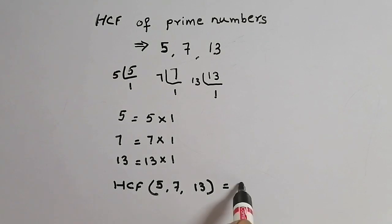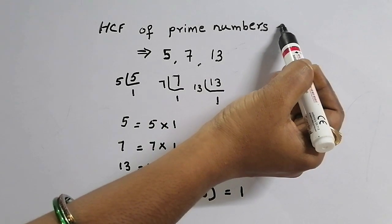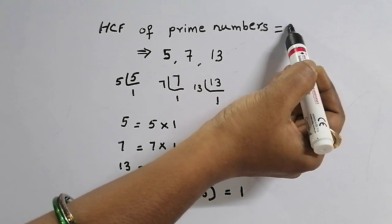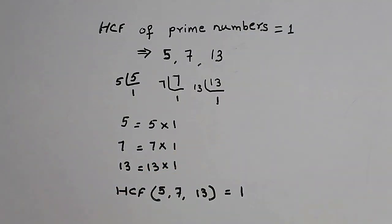HCF of 5, 7, 13 is equal to 1. So we can always say that HCF of prime numbers is always 1. Thank you for watching my video.